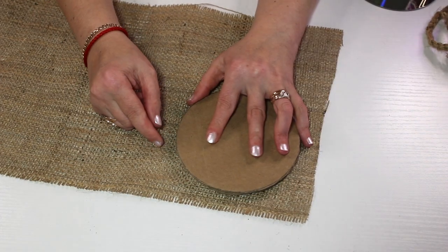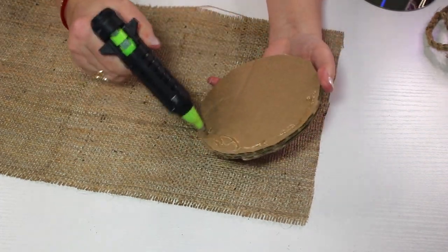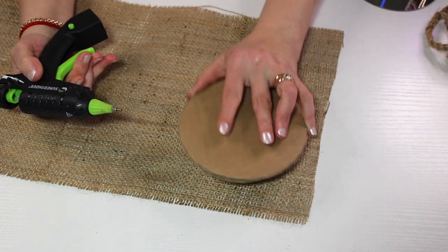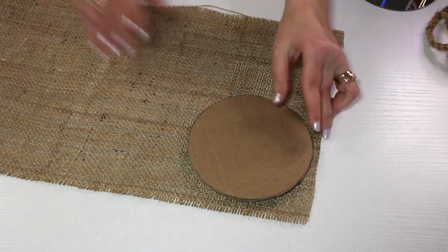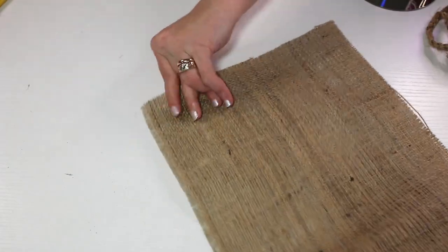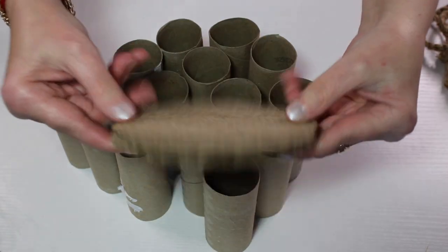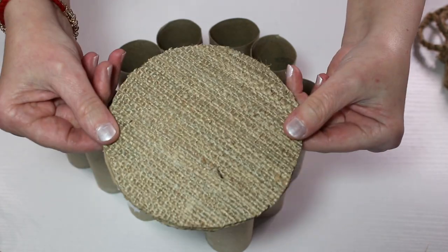Next, I got some burlap fabric. You can use anything you like, but I still have the gigantic 100-yard roll and I love using it. It's so easy to work with. I used some hot glue and just placed it right on top and I did the same thing to the opposite side.